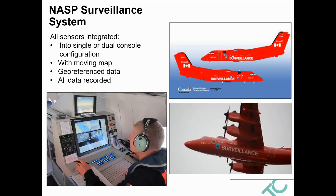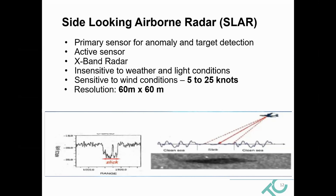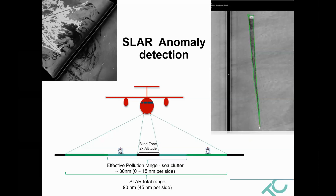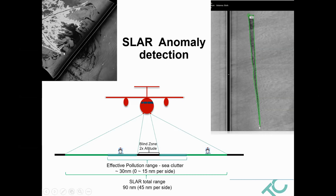The side-looking airborne radar is an active sensor that works on the same principle as SAR on satellite — we're looking for the dampening that oil causes to the sea surface. This has allowed us to dramatically increase the program effectiveness. It can be used in dark conditions as well as through cloud. This sensor requires wind on the surface, with a threshold between 5 and 25 knots, and has a resolution of about 60 metres. The radar is effective up to 45 nautical miles per side of the aircraft for solid vessel detection, but for pollution detection it's only useful within the sea clutter range when we have a backscatter. Here you can see a vessel and a polygon behind it — the green line outlines the area of oil — captured off the Gulf of Mexico during Deepwater Horizon.